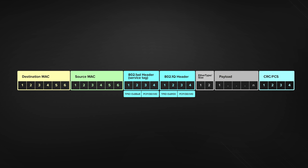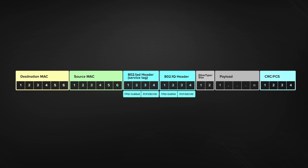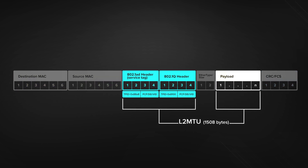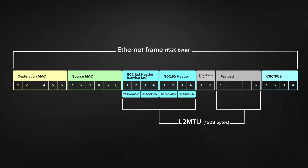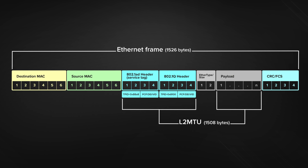If we take the Q-in-Q example where we have a frame 1526 bytes in size, then the L2MTU we require to process that is 1508. It is the MTU plus two VLAN tags. Another way to look at it: the difference between L2MTU and the actual Ethernet frame size is those 18 bytes I talked about before.